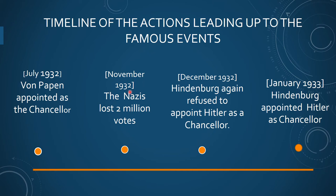November 1932: the Nazis lost 2 million votes, but came out as the single largest party. Although the votes fell, Hitler regarded this election as a disaster — he lost more than 2 million votes along with 38 seats in the Reichstag. The signs were that Hitler's tide had finally turned. The Nazis started running out of funds, and it was also said that Hitler threatened to commit suicide. But 1933 was to be Hitler's year — let's wait and see what happens in December 1932.